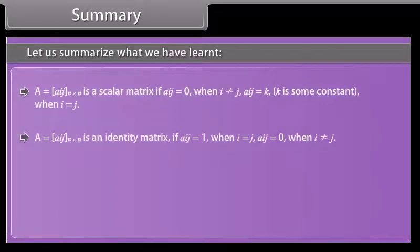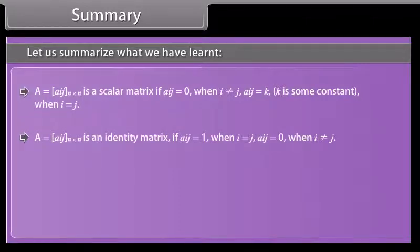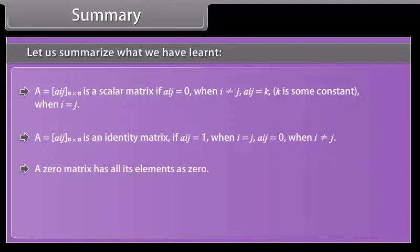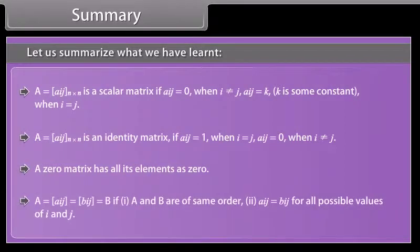A matrix A_ij of order N by N is an identity matrix if A_ij equals 1 when i equals j, and A_ij equals 0 when i is not equal to j. A zero matrix has all its elements as 0. Two matrices A and B are equal if they are of the same order and A_ij equals B_ij for all possible values of i and j.